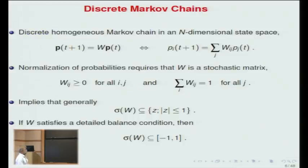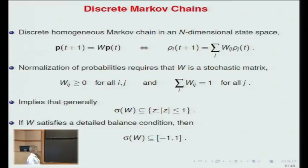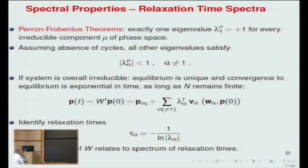Let's look at discrete Markov chains. This is a physicist convention — you multiply on the left. So if you have a probability vector and you want to know it at time t+1, you multiply it with the Markov transition matrix. The matrix elements need to be non-negative and the column sums need to be normalized to 1. This condition implies generally that you expect the spectrum of the transition matrix in the disk of radius 1 in the complex plane. If your W satisfies a detailed balance condition with some equilibrium distribution, then the spectrum is real, even if W is not symmetric itself, and it is in the interval minus 1, 1. You all know about Perron-Frobenius theorems.